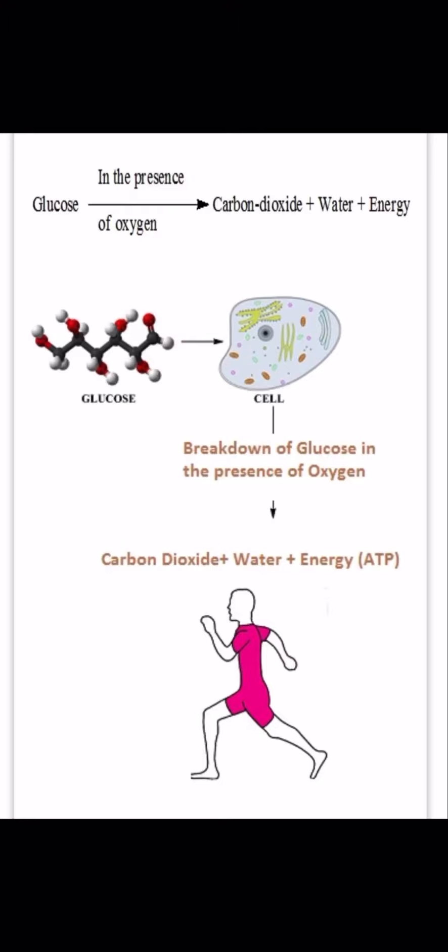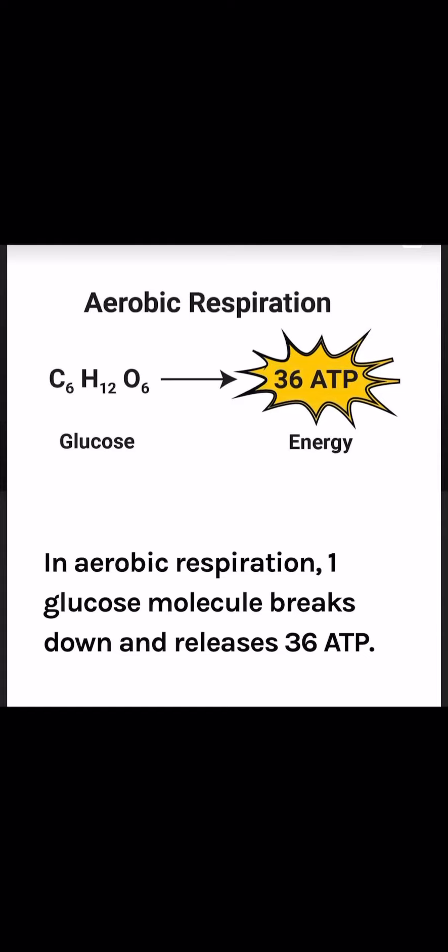We can represent aerobic respiration with a chemical equation: C6H12O6, which is glucose, reacts with oxygen to produce carbon dioxide, water, and energy. In aerobic respiration, if one molecule of glucose breaks down, we get 36 ATP. ATP stands for adenosine triphosphate — these are energy-rich molecules released when food breaks down with the help of oxygen in the cells.